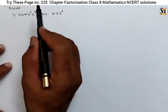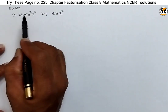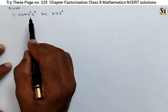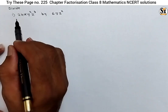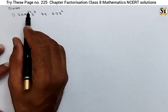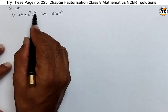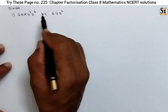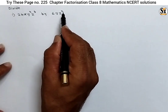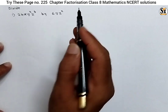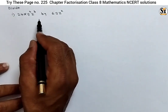See the question under the 'Try This' section, page number 225. Here, what is asked: divide — two expressions are given. The first is 24x·y²·z³, and we divide this expression by 6yz².